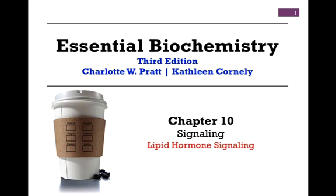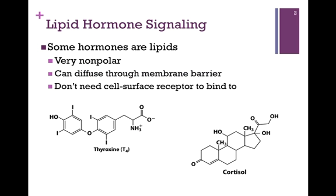In our final lesson on Chapter 10, we want to consider lipid hormone signaling. In a previous lesson, we saw that hormones could be a variety of substances — metabolites, peptides, portions of peptides — and in some cases hormones are lipids.